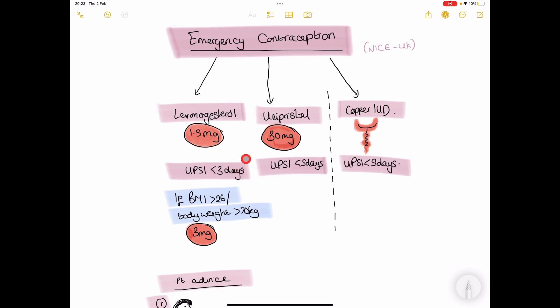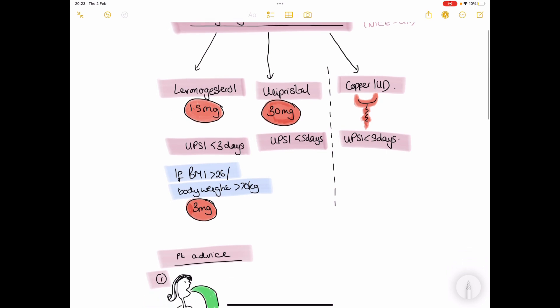If the patient, after you've calculated their last menstrual period and worked out an estimated ovulation date, if it's likely that the patient has already ovulated, then the oral emergency contraceptions won't work. It's better to offer the patient a copper IUD.